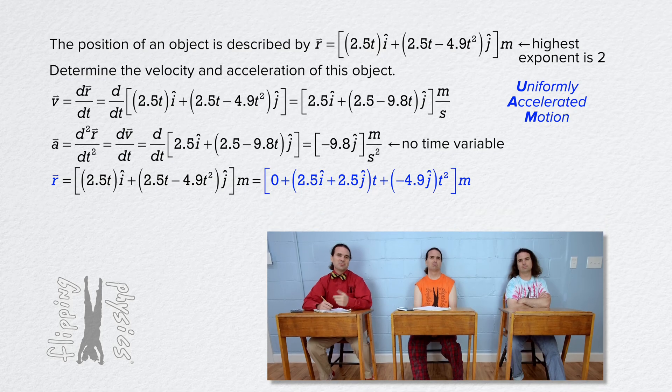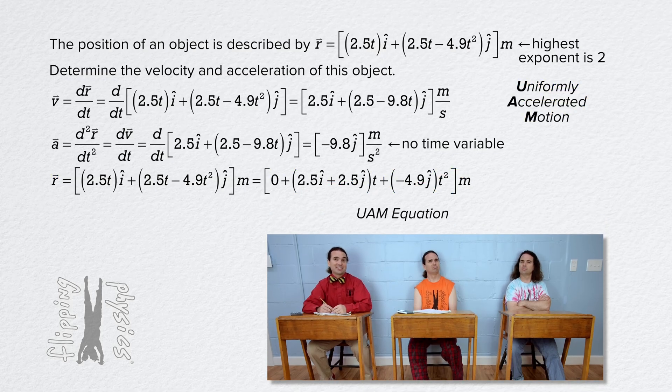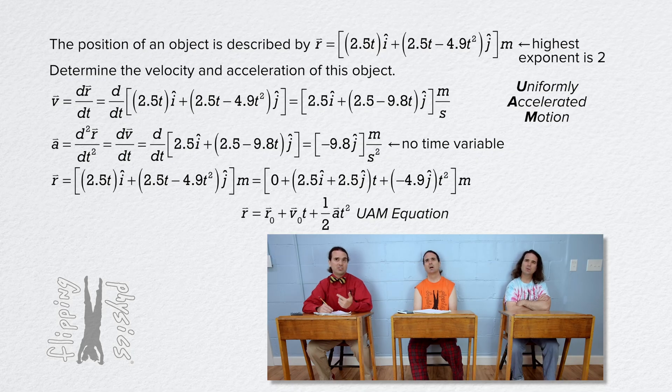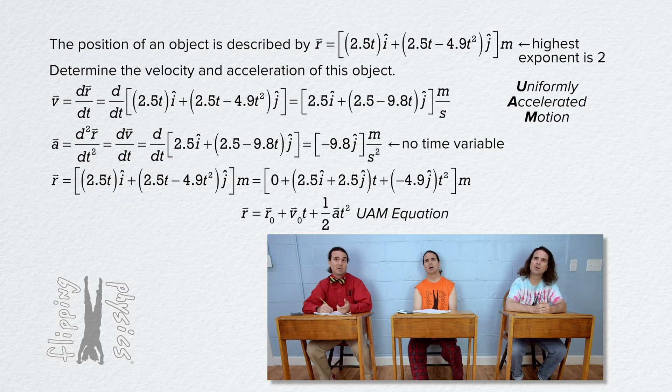Oh, it is one of the UAM equations. Really? Yeah. Which one? R position equals R position naught plus velocity naught times time plus one-half times acceleration times time squared.